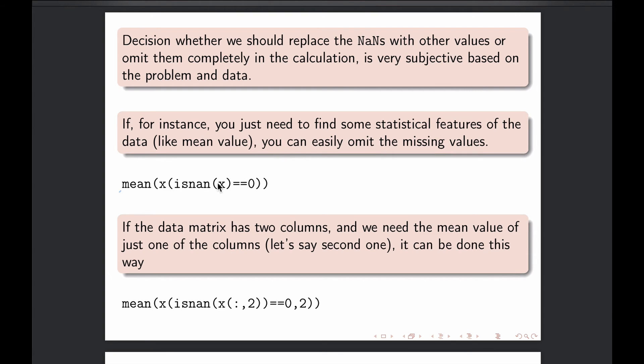So in this way, you would just say, if you have vector x, you take mean value of those x elements, which are not NANs, so which do have numerical values. And if the data matrix has two columns, then the same trick would be done like this. So looking from inside, we consider second column of matrix.